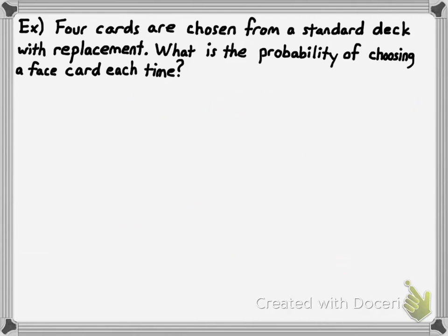Let's look at an example. Four cards are chosen from a standard deck with replacement — after you draw a card you put it back in the deck. What is the probability of choosing a face card each time? I'll say F represents getting a face card, and I want to find the probability of getting a face card on the first draw, the second draw, the third draw, and the fourth draw. The probability of all those things happening, assuming these are independent events, would be to multiply the probabilities together.